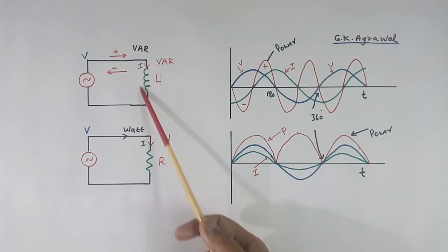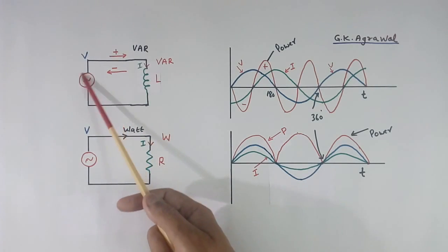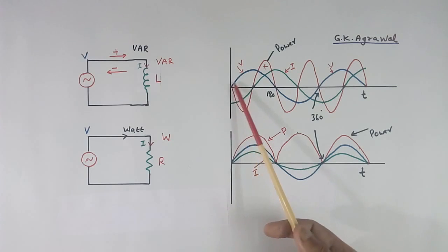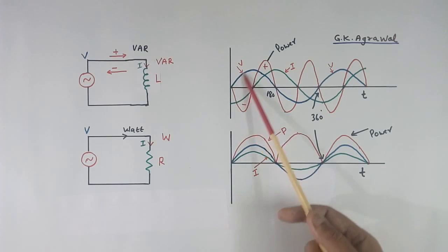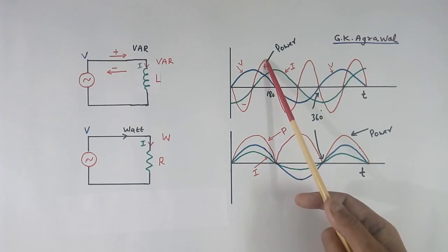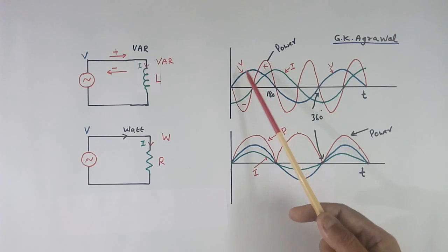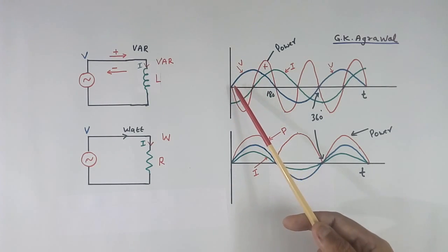Here one inductor is connected as a load across AC supply. And this is voltage and current plot and power plot. Blue is voltage, green is current, and red is power. These are not RMS values, these are instantaneous values.